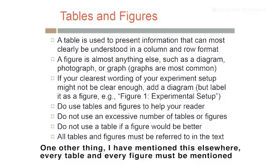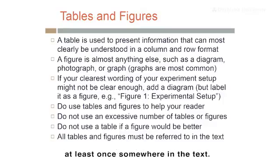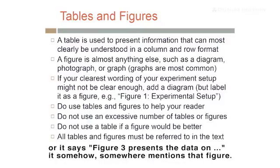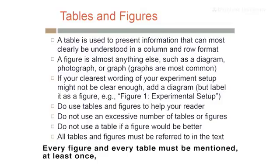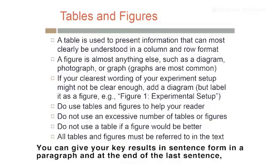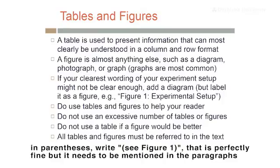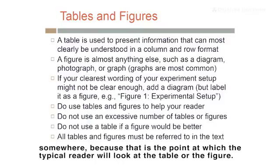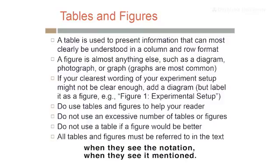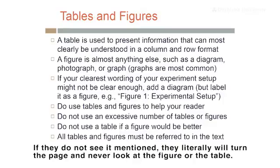Every table and every figure must be mentioned at least once somewhere in the text. When you're proofreading, check for this. If you have Figure 3, make sure somewhere in your writing it says 'see Figure 3' or 'Figure 3 presents the data on...' — it must be mentioned somewhere in the paragraphs. It can be in parentheses at the end of a sentence. Most readers will be reading the words and only go to look at a table or figure when they see it mentioned — if they don't see it mentioned, they'll turn the page and never look at it.